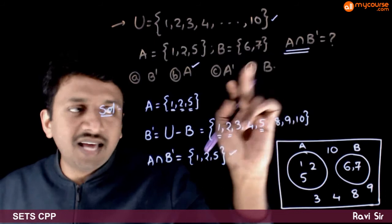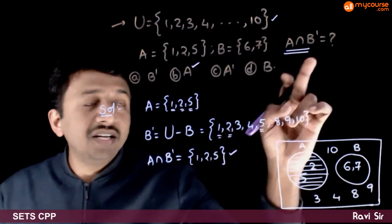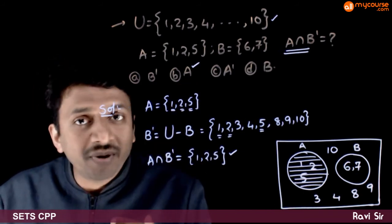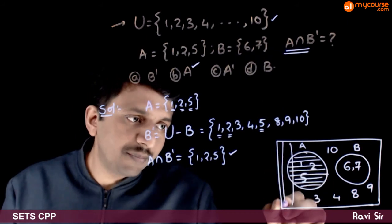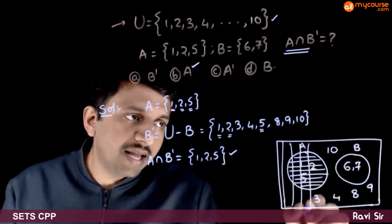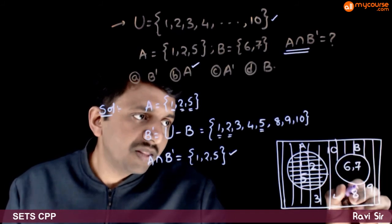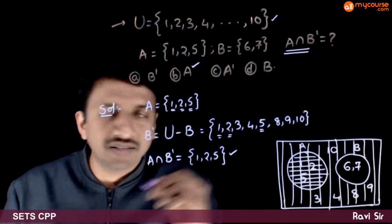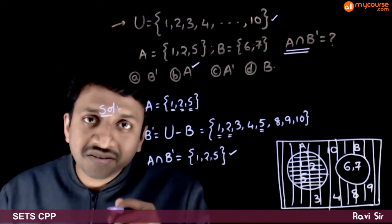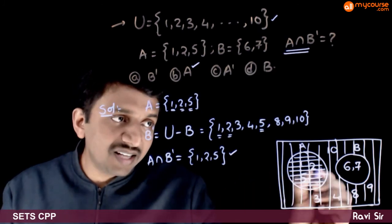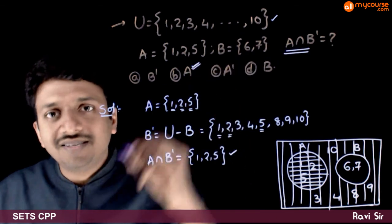Now what is asked? A, that is this region, intersection B complement. B complement is the whole region except B. I'm plotting it with vertical lines. So B complement is the area corresponding to this. What is the intersection? Intersection is the common region, the checked region. As you can very clearly see, the checked region is nothing but set A. Hence, set A is the answer.